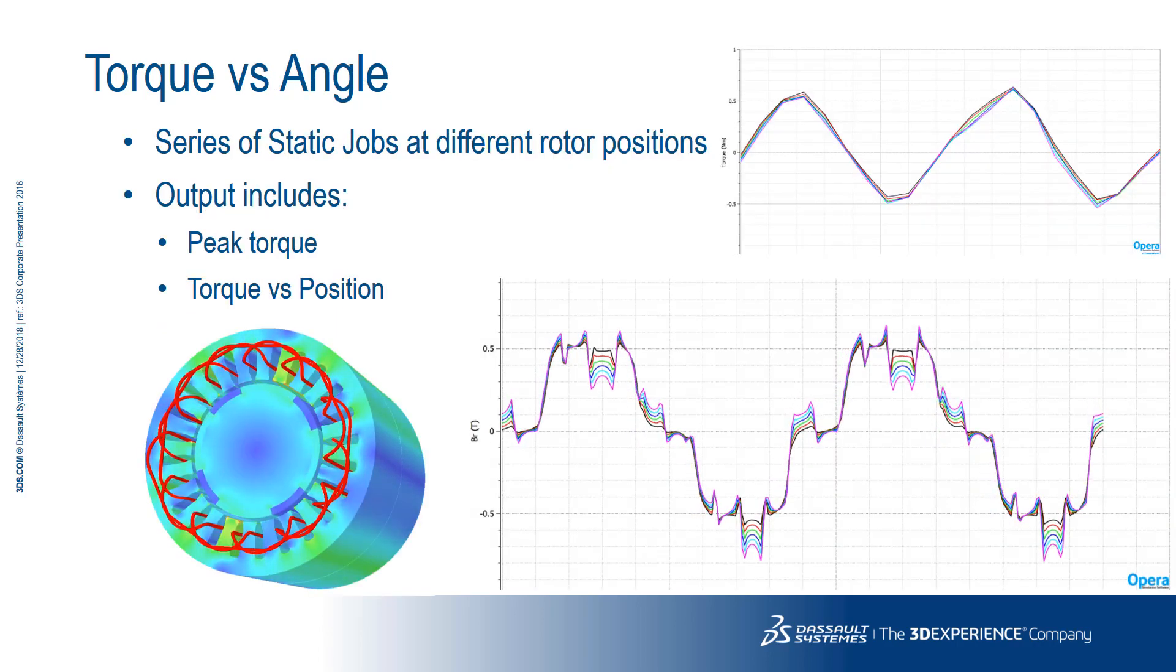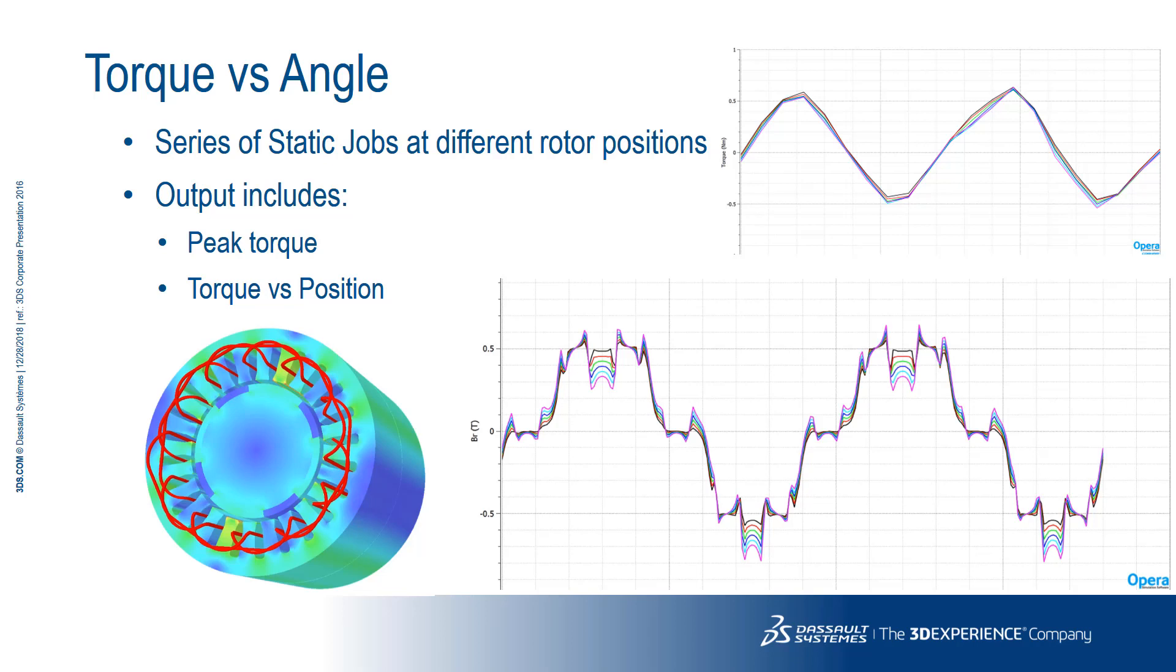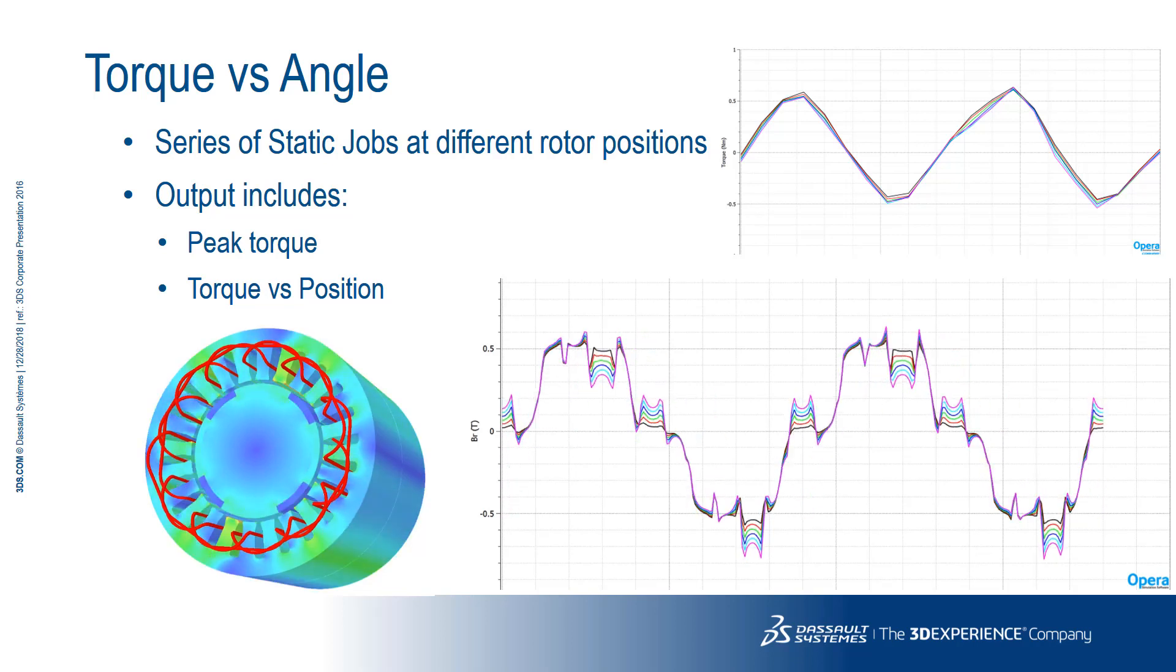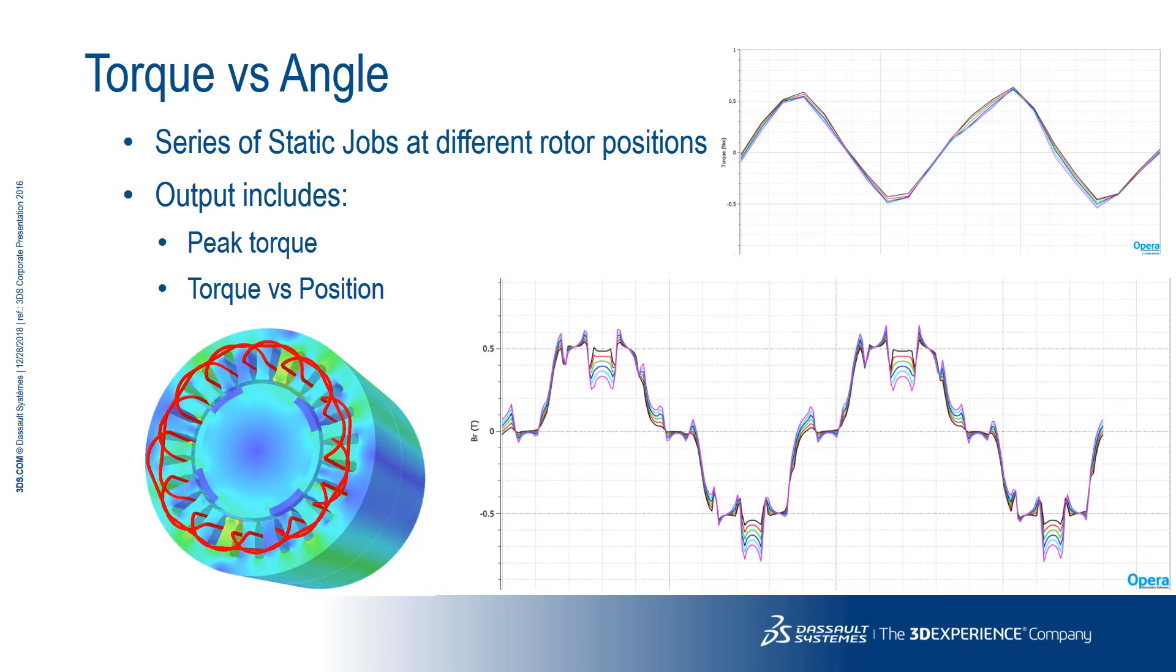The torque versus angle analysis creates a series of static jobs for different rotor positions. The output includes the value of peak torque, its mechanical angular position, and the torque versus position curve.